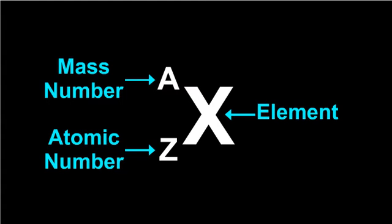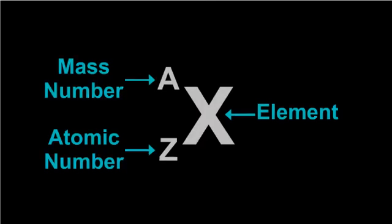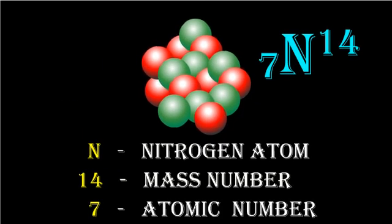Mass number is written as superscript on the symbol of the element. For example, N14 stands for an atom of nitrogen with a mass number 14 and atomic number 7.